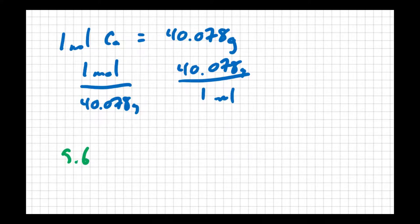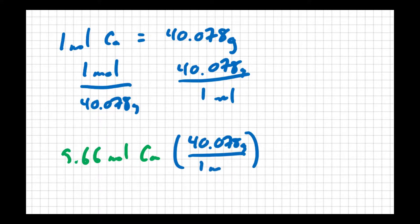In the problem, we were given 5.66 moles of calcium and asked to solve for mass. So I'm going to use a conversion factor that has moles on the bottom so that I can cancel out. So I'm going to put 40.078 grams over one mole. Moles cancel out. And when all is said and done, I get 226.84. Looking at three sig figs, I'm going to say 227 grams of calcium.